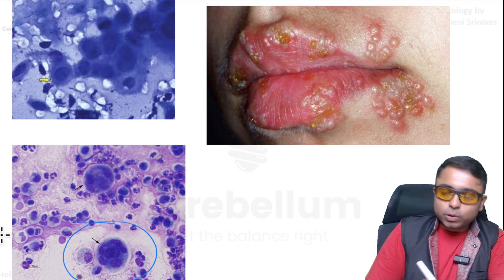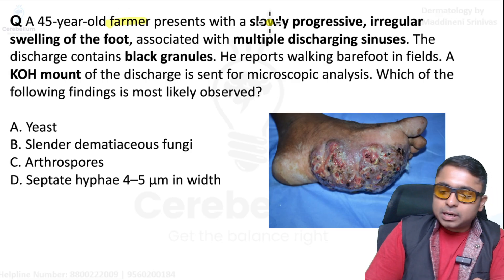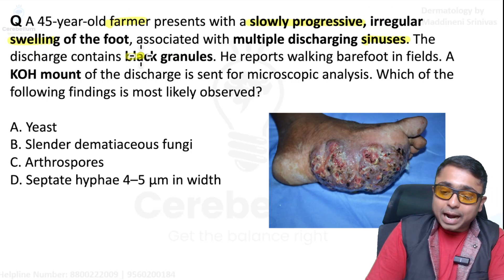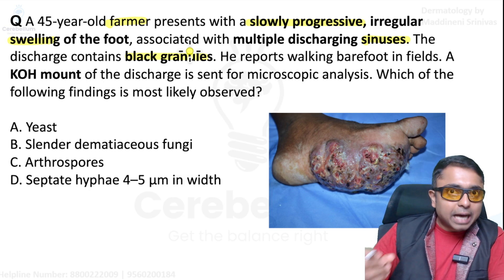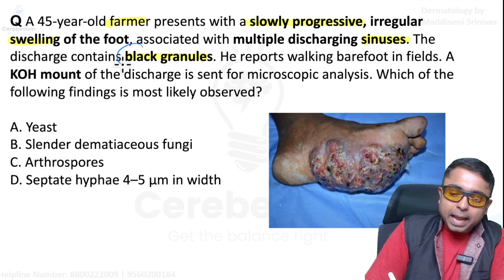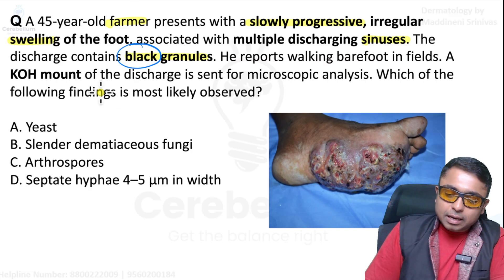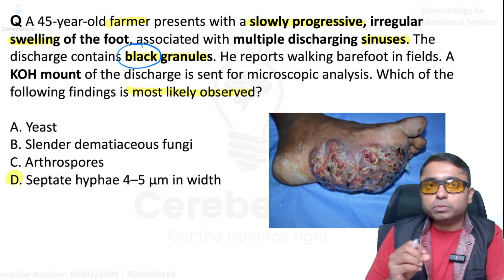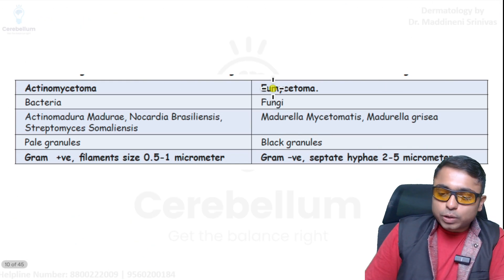The next question: a farmer with slowly progressive irregular swelling, sinuses, and granules. Remember the triad — GST. Using our mnemonic, the diagnosis is mycetoma, and specifically it has black granules. What is being asked is the most likely finding on KOH examination. Please remember, students, it is going to be septate hyphae 4 to 5 microns in width.